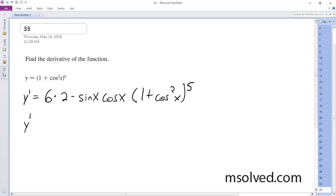So the final answer, simplified down, is negative 12 sine x cosine x times 1 plus cosine squared x raised to the fifth. And that's it.